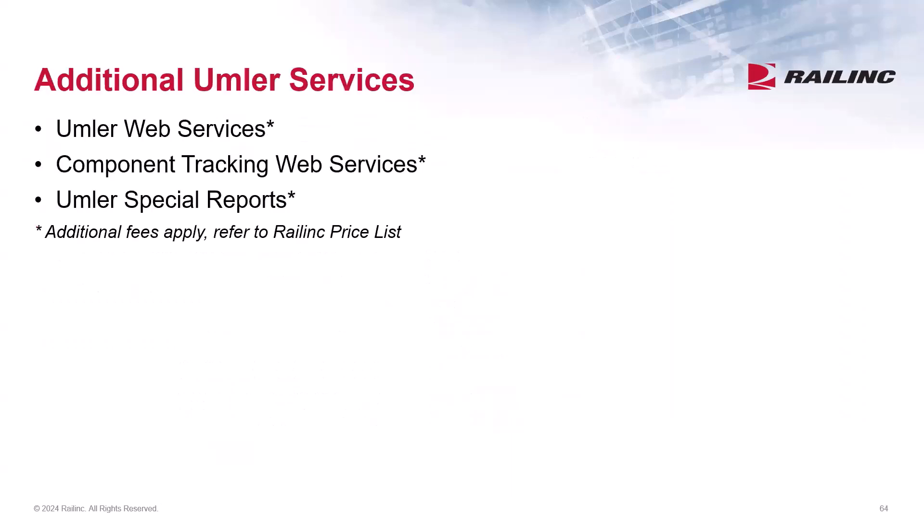Now let's discuss the additional options users have when making updates to Umler. They are the Umler and component tracking web services. Both services take place outside of the manual updating via the web user interface. Web services is a system-to-system communication that is sent via XML message. If you're interested in learning more about web services, please contact our customer success team at csc@railinc.com. Also available is Umler special reports, where you may request a more detailed and statistical analysis of your rail fleet. Please refer to the Railinc price list for all applicable fees.